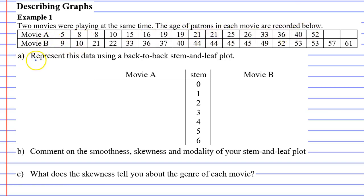Question A says represent this data using a back-to-back stem-and-leaf plot. If I was doing movie A, I'd start off with the first few numbers 5, 8, and 8, and I would write it from right to left. For movie B, I would write it from left to right.